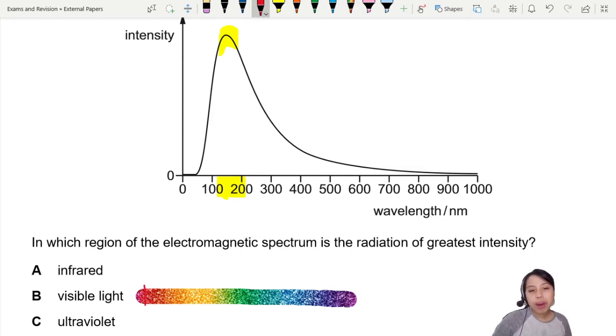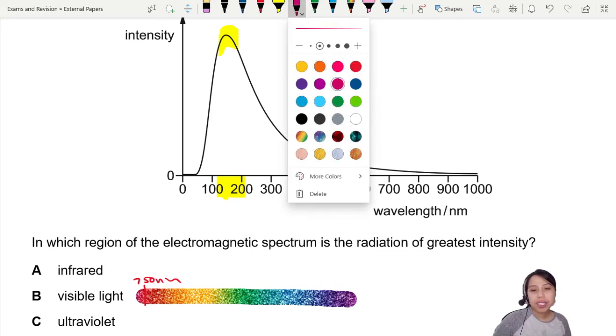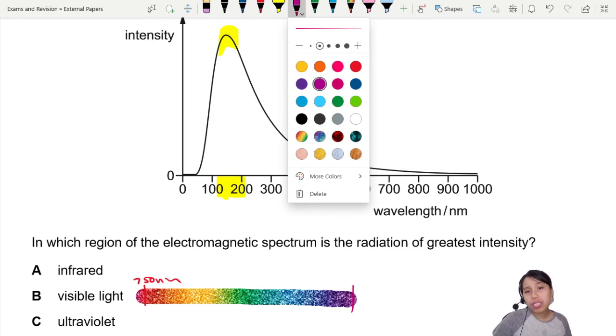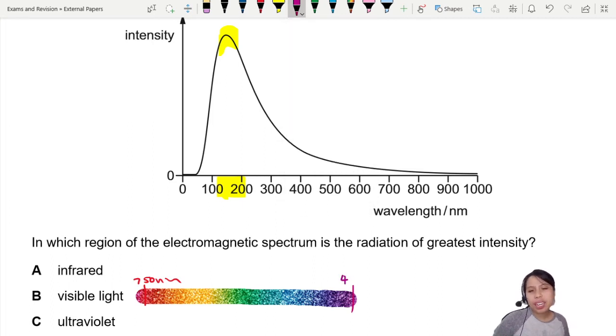We will go from about, the longest wavelength is about 750. Shortest is purple. Do I have purple color? Purple, somewhere about 450, 400, somewhere there. Let's just say 400. It's almost ultraviolet already.